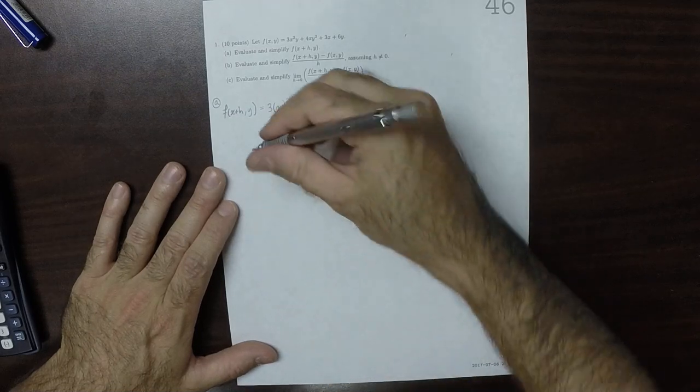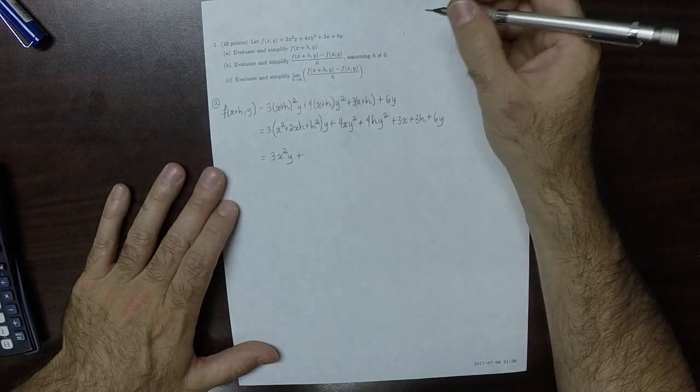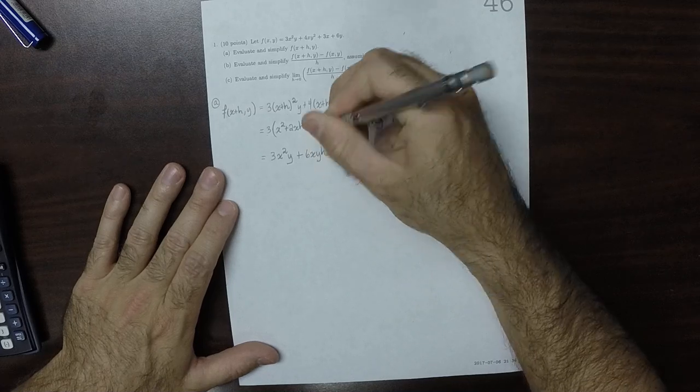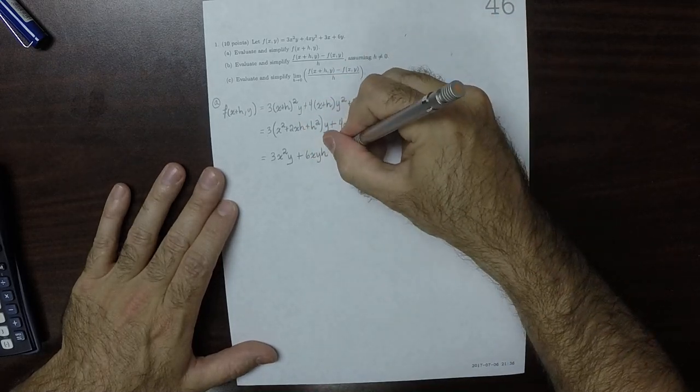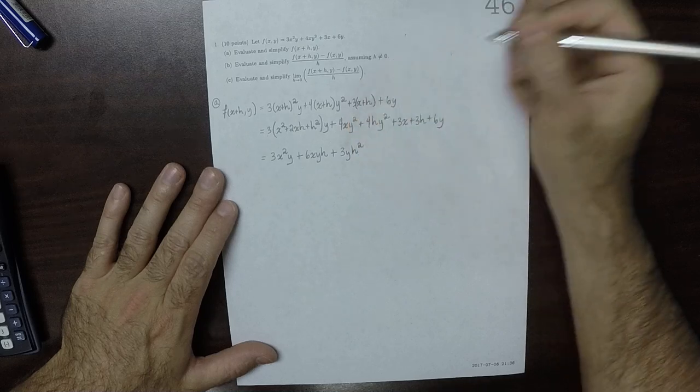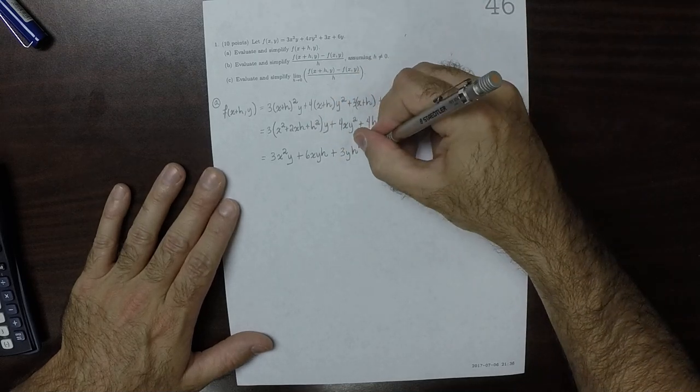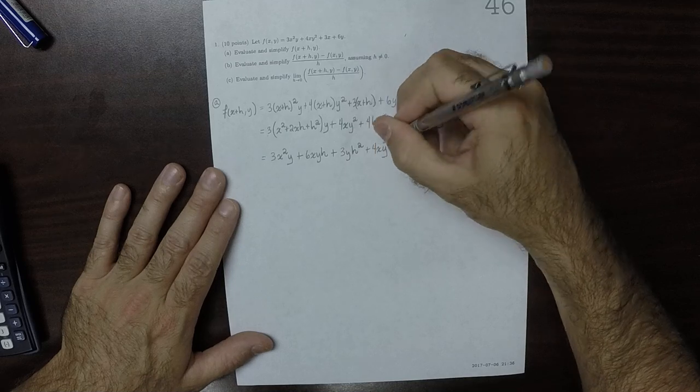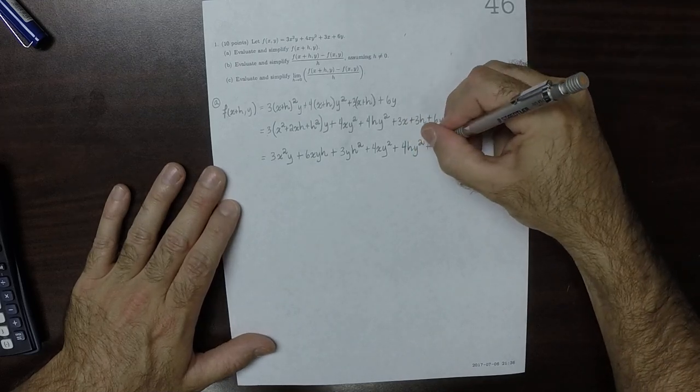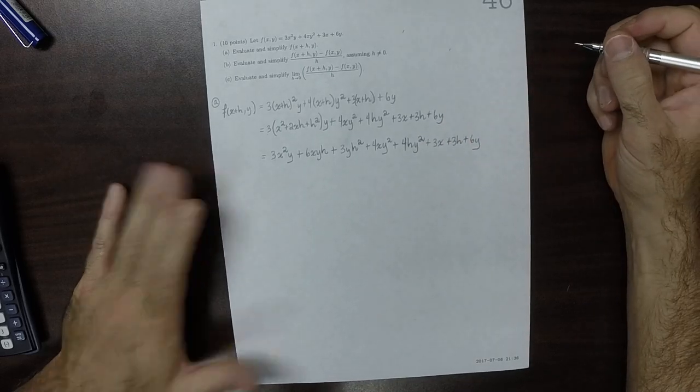So that would be 3x squared y plus 6xyh plus 3yh squared, and then the rest just get copied. So 4xy squared plus 4hy squared plus 3x plus 3h plus 6y. Okay, so that's part a.